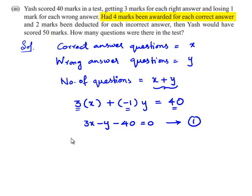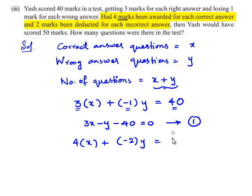According to the second condition, 4 marks will be awarded for each correct answer and 2 marks will be deducted for each incorrect answer. So we can write 4 times x plus minus 2 times y equals 50, that is 4x minus 2y minus 50 equals 0. Let this be equation number 2.